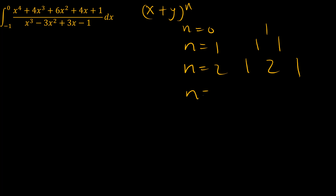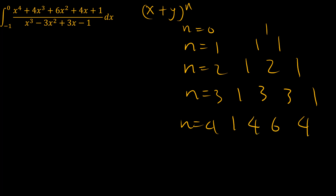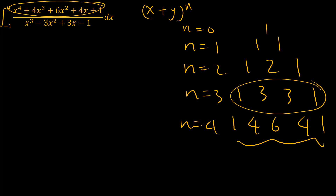When n equals 3, the coefficients are 1, 3, 3, 1. When n equals 4, it's 1, 4, 6, 4, 1. This here is the same as what you see in the numerator, and this here is what we see in the denominator.